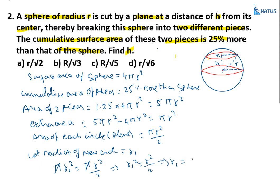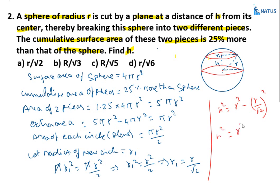With r1 = r/√2, we find h using the Pythagorean theorem: h² = r² - r1² = r² - (r/√2)² = r² - r²/2 = r²/2. Therefore h = r/√2. Option A is the correct answer.